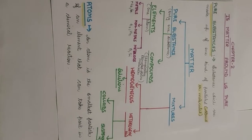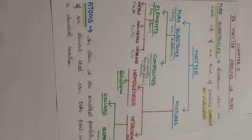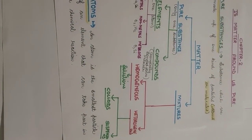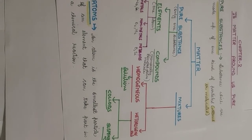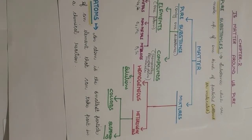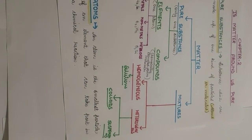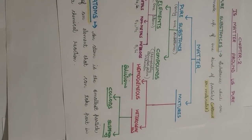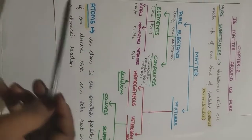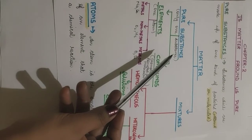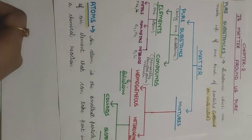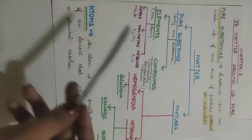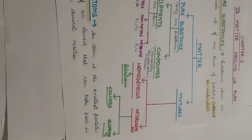In the first chapter, we have read about the physical nature of matter. So in this chapter, we are dealing with the chemical nature of matter. That is, chemically, the matter can be divided into two types: pure substances and mixtures. Pure substances, as we have read already, are of two types — elements and compounds — which we discussed in the last lecture.